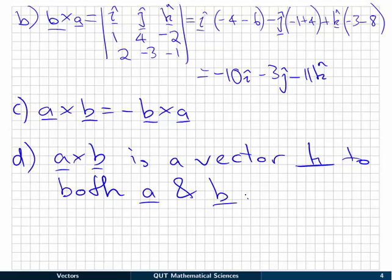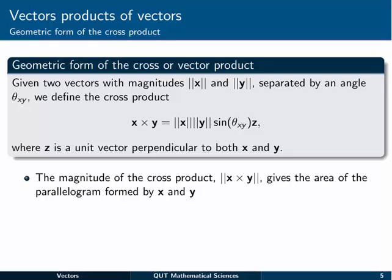We could have also used b cross a, it doesn't really matter. The answer to part c is actually a rule that carries for all vectors, so you can keep that in mind if you like. To finish off, there's also a geometric form of the cross product.